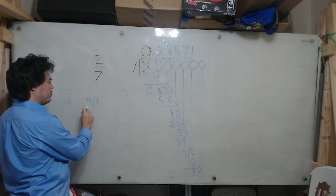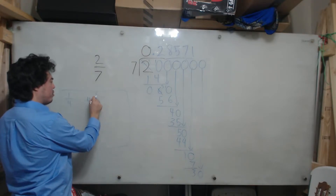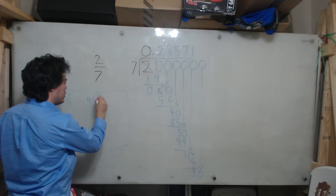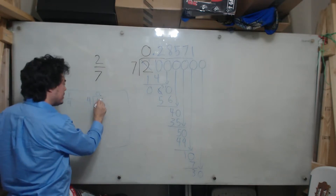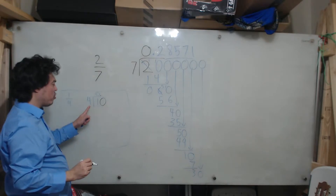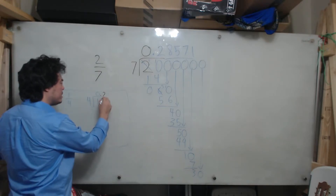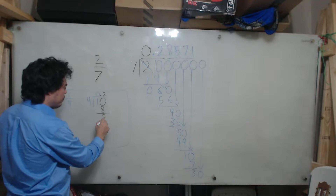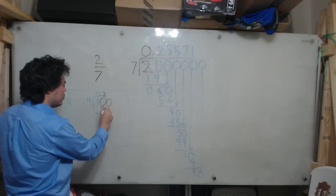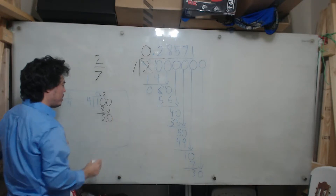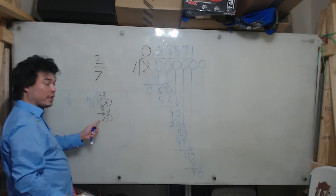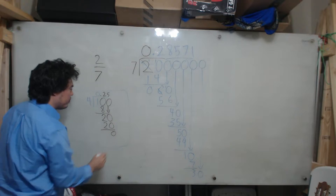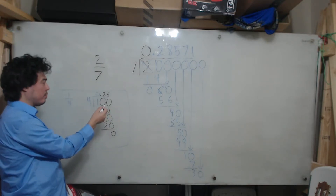We ask ourselves: does 4 go into 1? It does not, so I put a 0. Then, just as I showed you in this problem, I'm going to put a decimal point, and once I put a decimal point I can affix a 0. I ask how many times does 4 go into 10? 4 goes into 10 twice — 2 times 4 is 8. 10 minus 8 is 2. Then I affix one 0, drop it, and that gives me 20. How many times does 4 go into 20? It goes 5 times, because 5 times 4 is 20. 20 minus 20 is 0, so you can see there's nothing left to do here — this terminates.